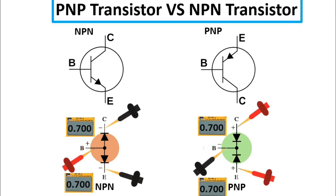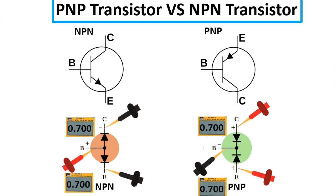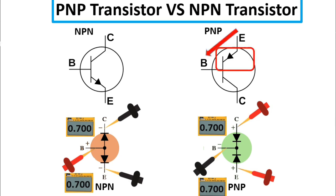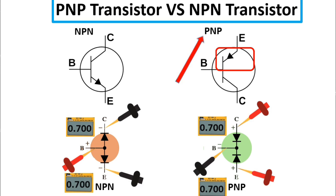I'm going to show you the difference between PNP transistor and NPN transistor. This is the symbol of NPN transistor and here the symbol of PNP transistor. For the transistor we have the base, collector, and emitter. For NPN transistor the direction of the arrow is from base to emitter, but for PNP transistor it goes from emitter to base. To remember: the arrow here is non-penetrating for NPN, and penetrating for PNP.